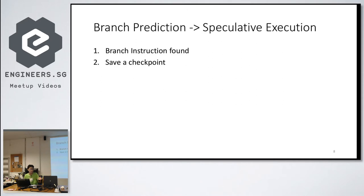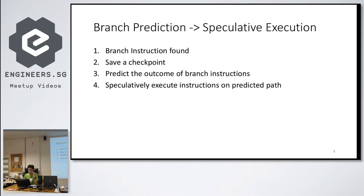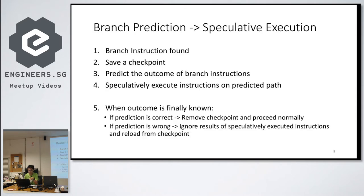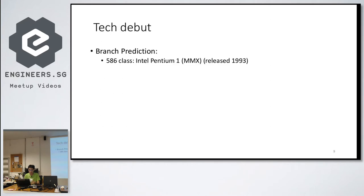How does branch prediction lead to speculative execution? Whenever you encounter a branch instruction like an if-else, the processor saves a checkpoint, tries to predict, then executes the instructions. There are two outcomes: if the prediction is correct, the processor removes the checkpoint and continues. If the prediction is wrong, the CPU rolls back — it ignores everything and reloads from the checkpoint at the point where the branch started, then executes the correct instructions.